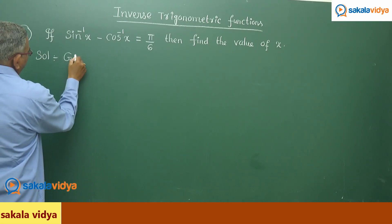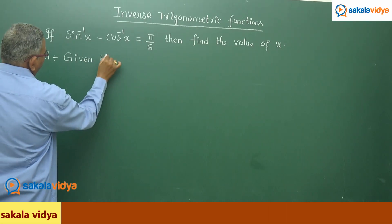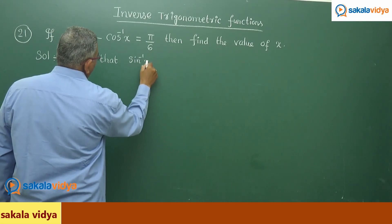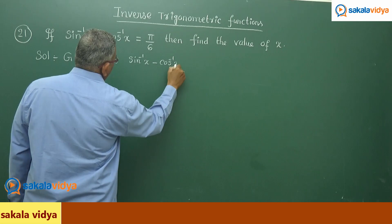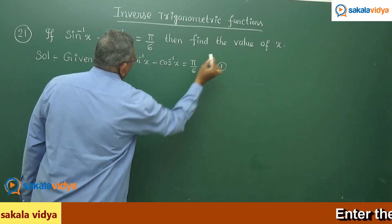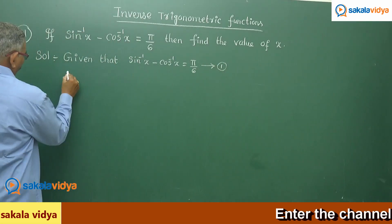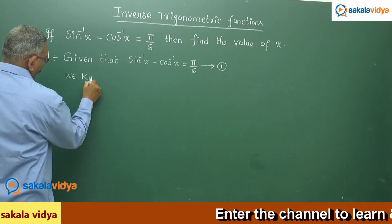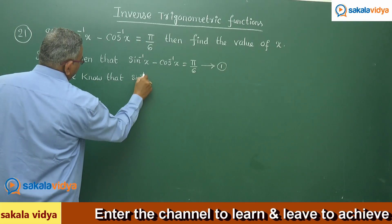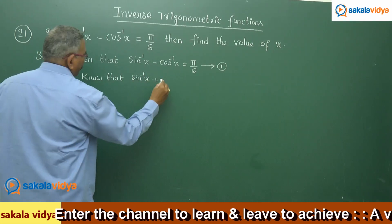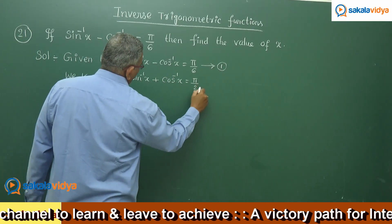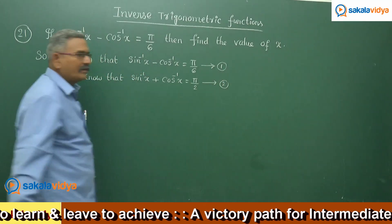Given that sin inverse x minus cos inverse x equals to pi by 6 — say this is equation 1. We know that sin inverse x plus cos inverse x equals to pi by 2. This is the formula — equation 2.